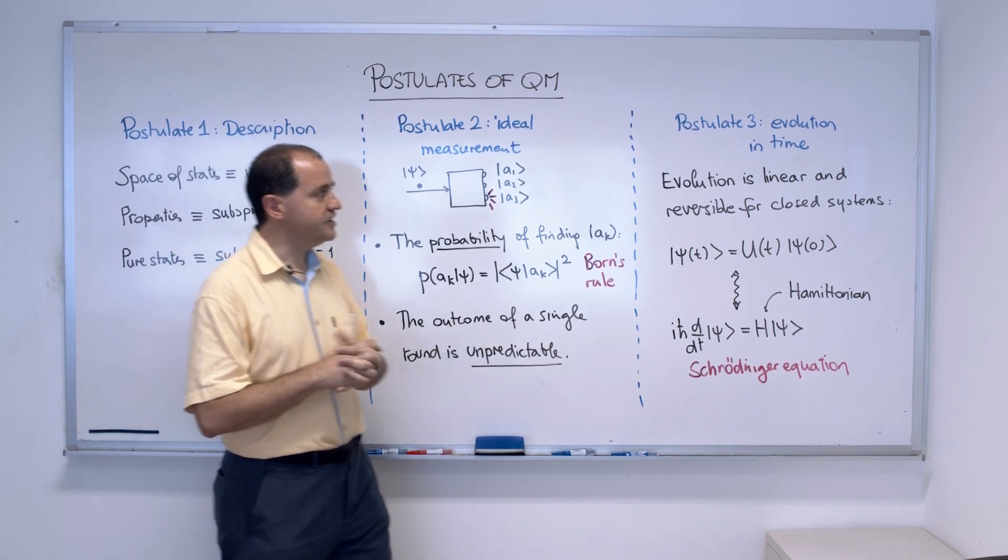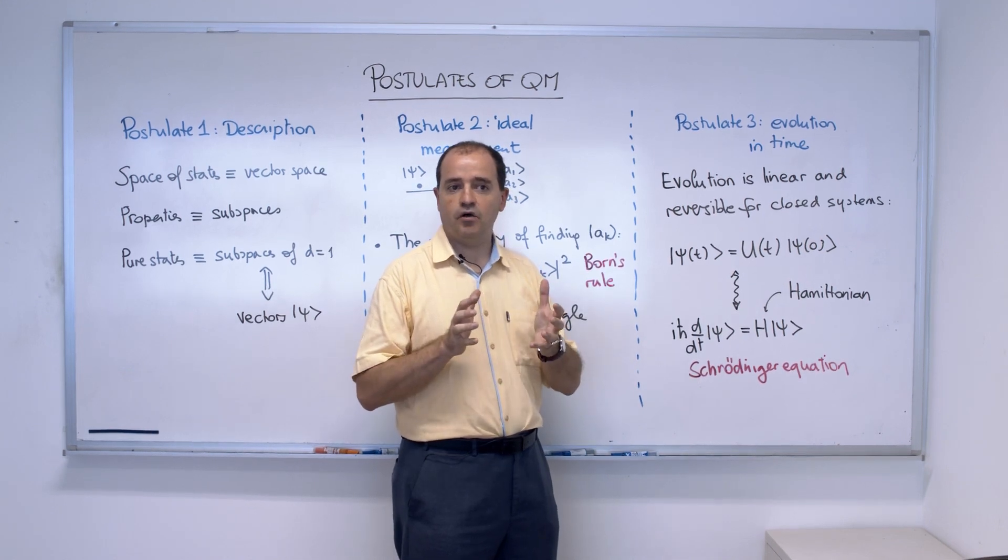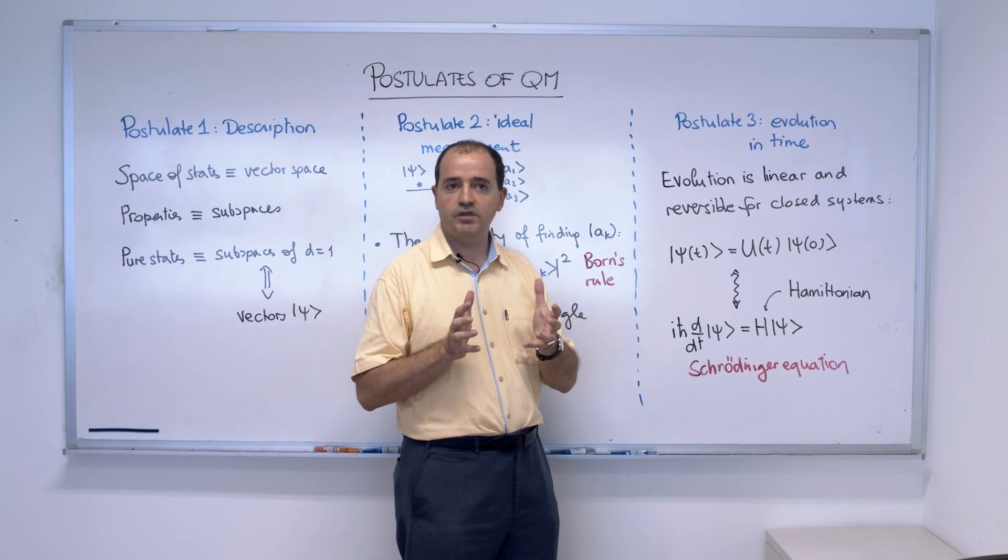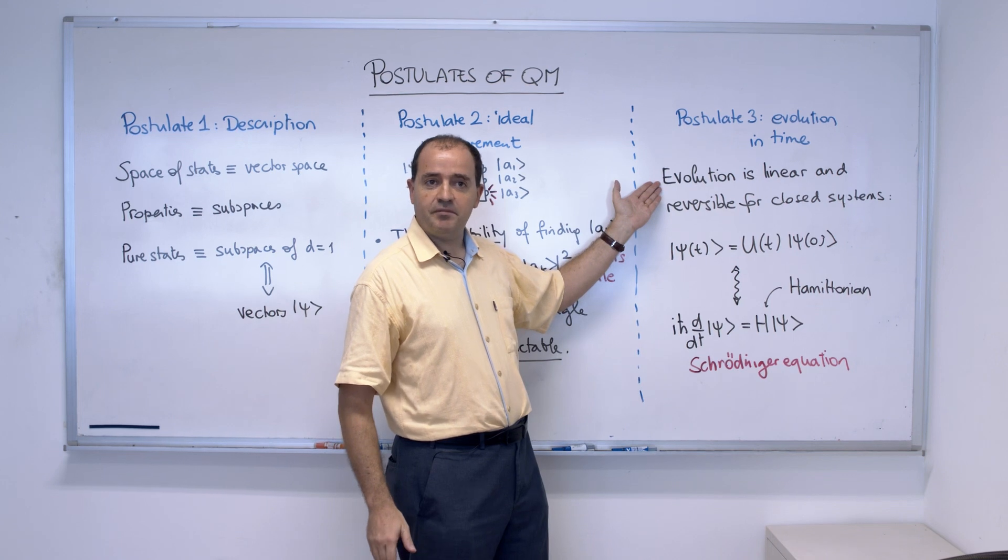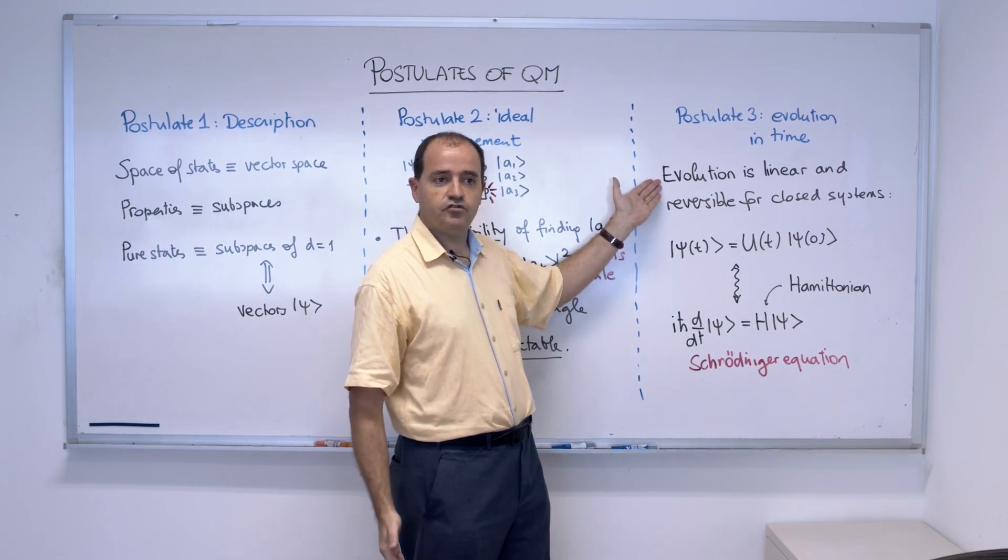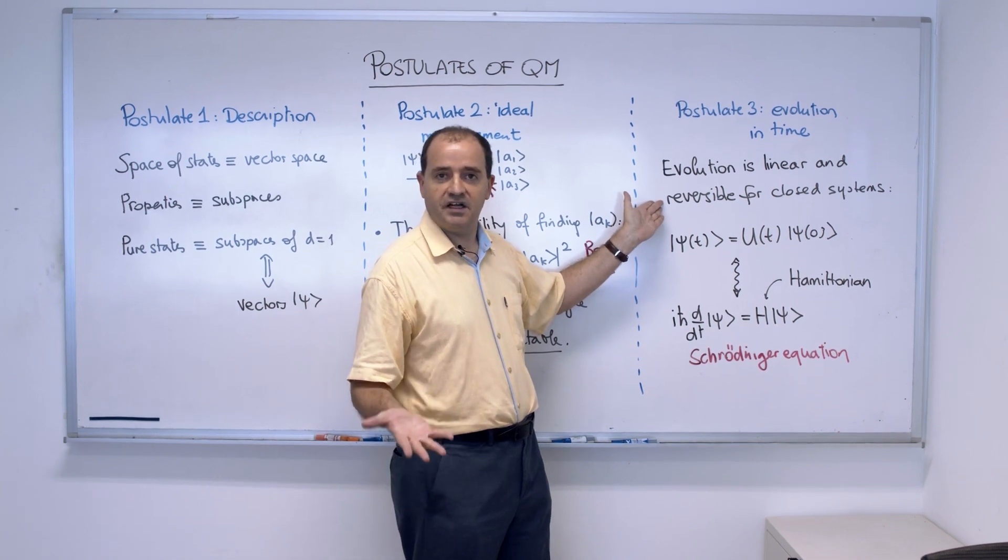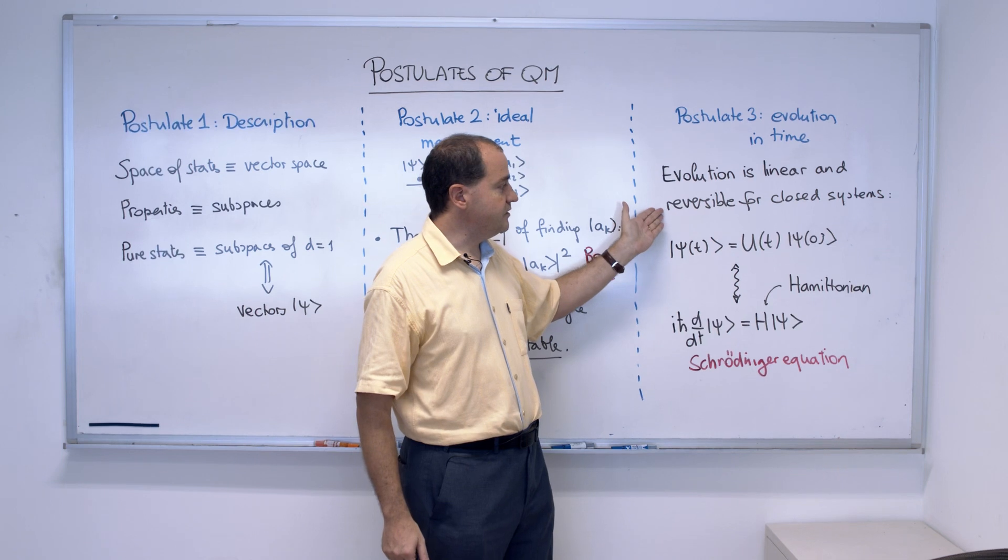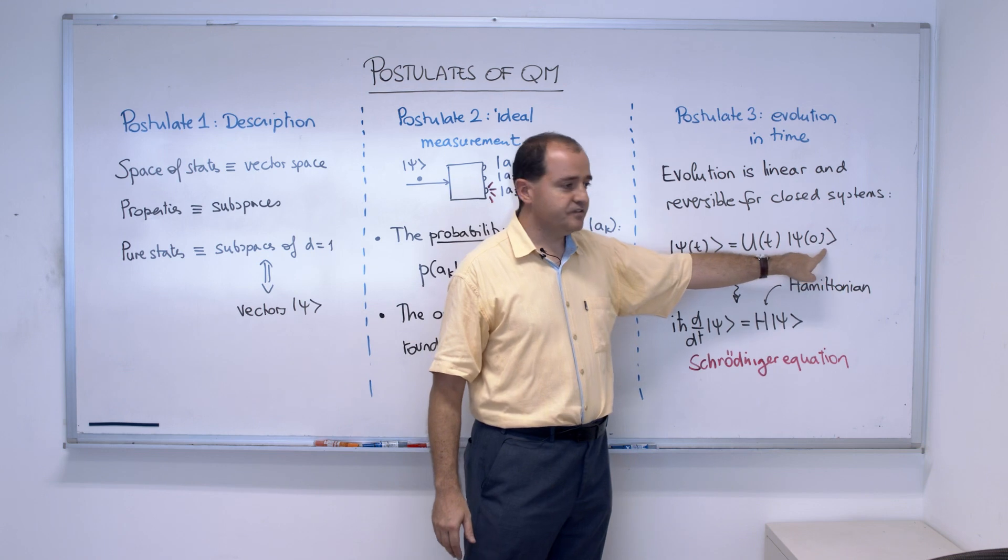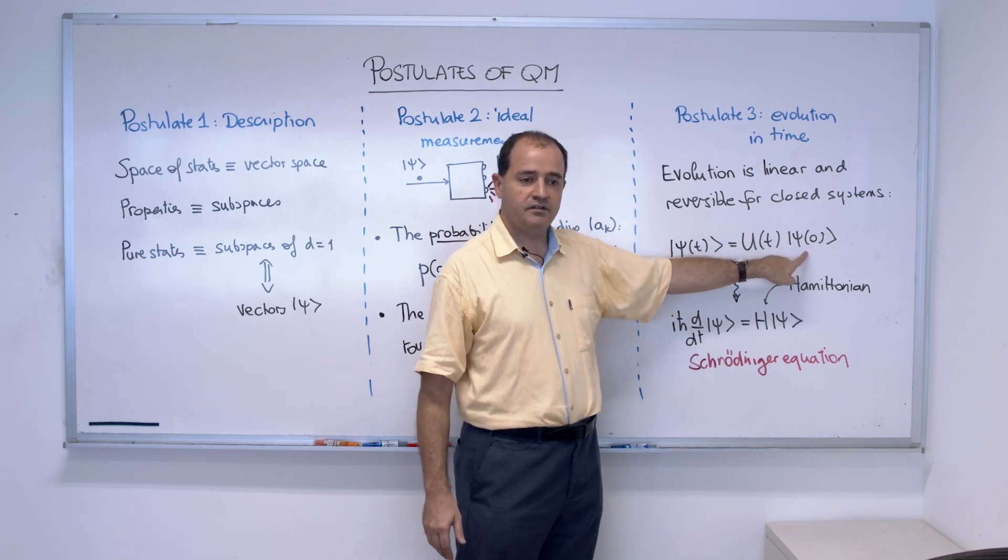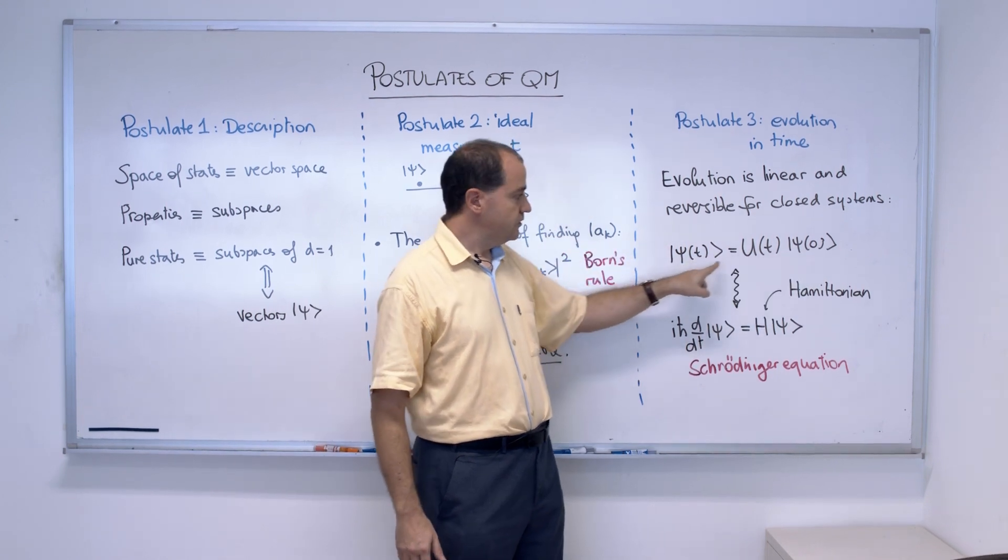The third postulate is about evolution in time. Here we are doing non-relativistic quantum theory, so we have the state of a particle at a given time and we want to know how it evolves at a later time. The postulate is evolution is linear, described by a linear operator, and is also reversible for closed systems. This is the same as in classical physics. And this implies that the evolution operator is unitary, can be proved. So, if I have the initial state at time zero given like that, there will be a unitary operator that propagates the state to time t.